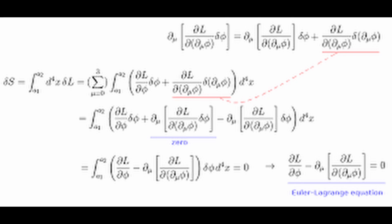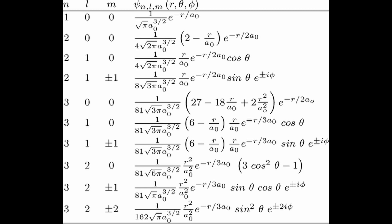For example, for a scalar field phi(x), the canonical commutation relations are given by: [phi(x), phi(y)] = [pi(x), pi(y)] = 0, and [phi(x), pi(y)] = i*delta(x, y), where pi(x) is the momentum conjugate to the field phi(x), and the brackets denote the commutator of the two operators.